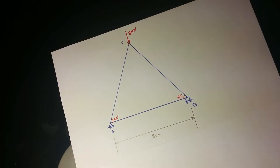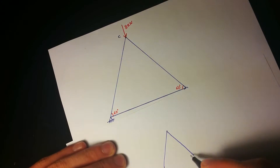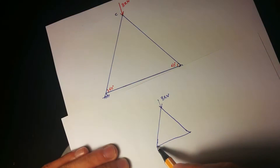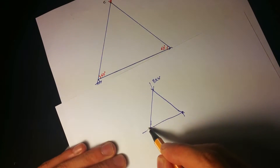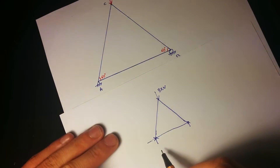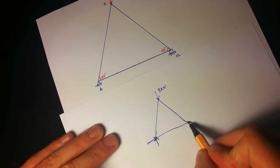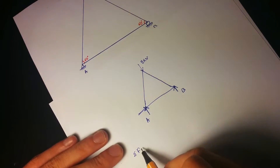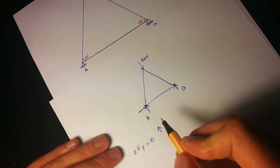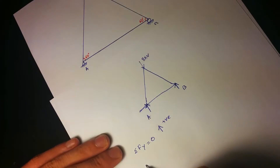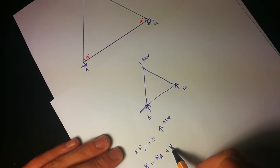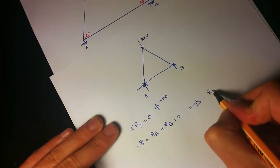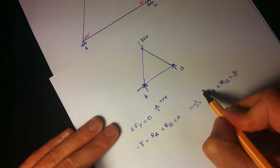First, we assume that the whole truss is just one structure and we calculate the reaction forces. A is a pin support so it takes vertical and horizontal forces; B is a roller support so it takes only vertical force. The sum of vertical forces equals zero — going up is positive — so minus 8 plus Ra plus Rb equals 0, giving us Ra plus Rb equals 8. This is the first equation.